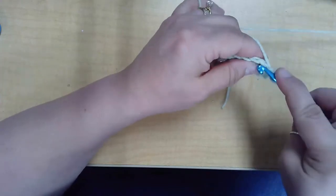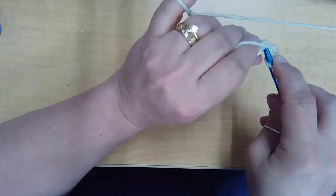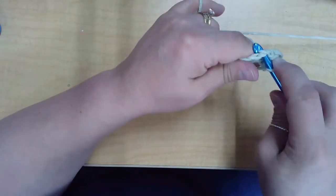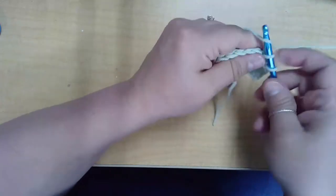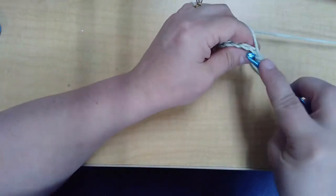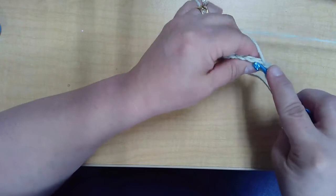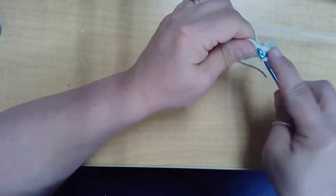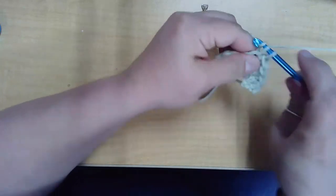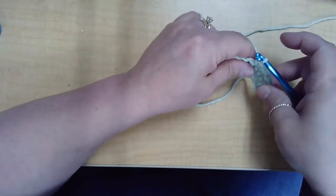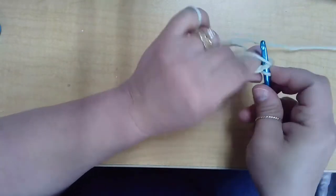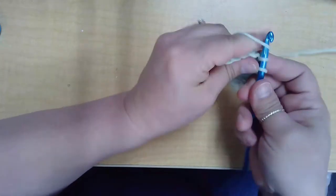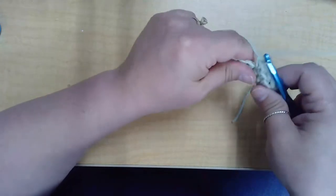So, once we've done a row of single crochet, it'll look a little different because we're working into completed stitches rather than into a chain. So, we're going to hook sliding. Go under the V, yarn over, pull through, yarn over, pull through two loops. Just like that.